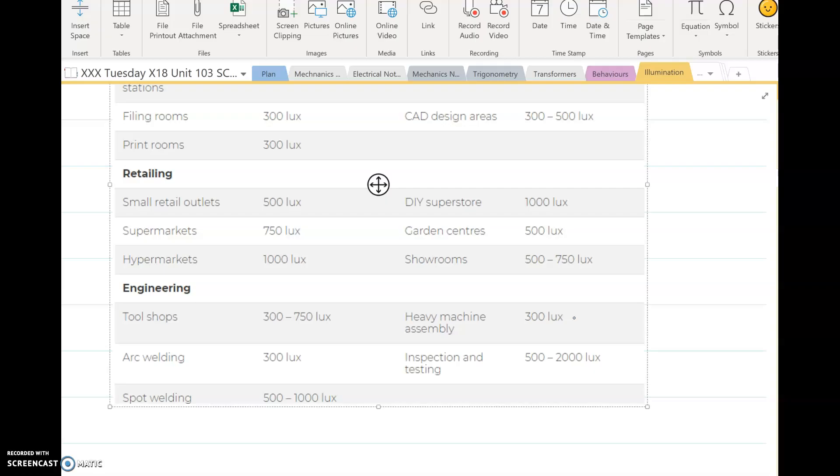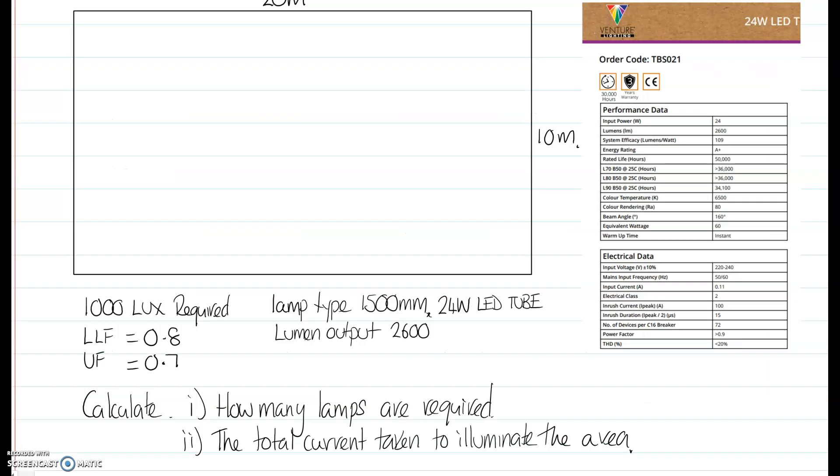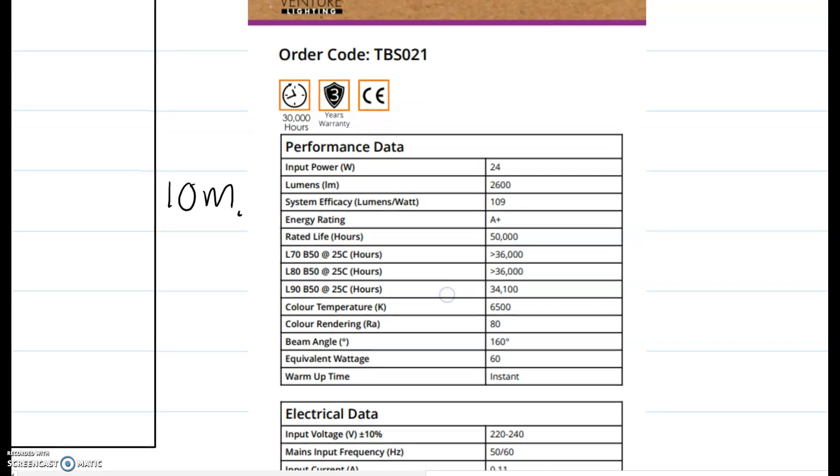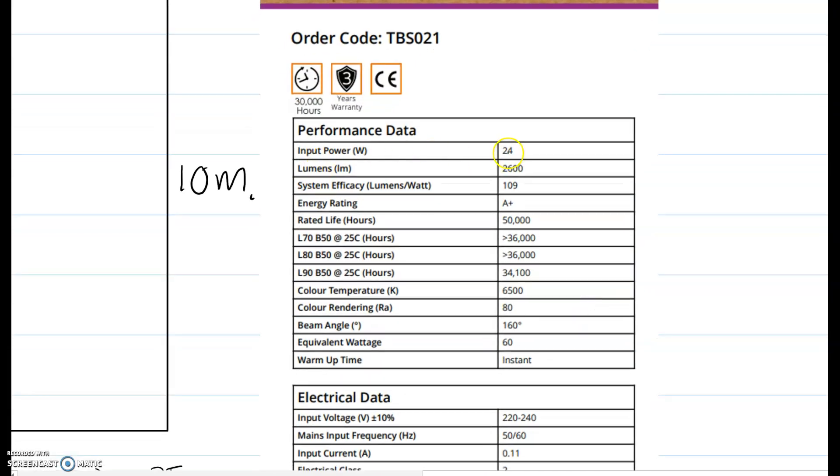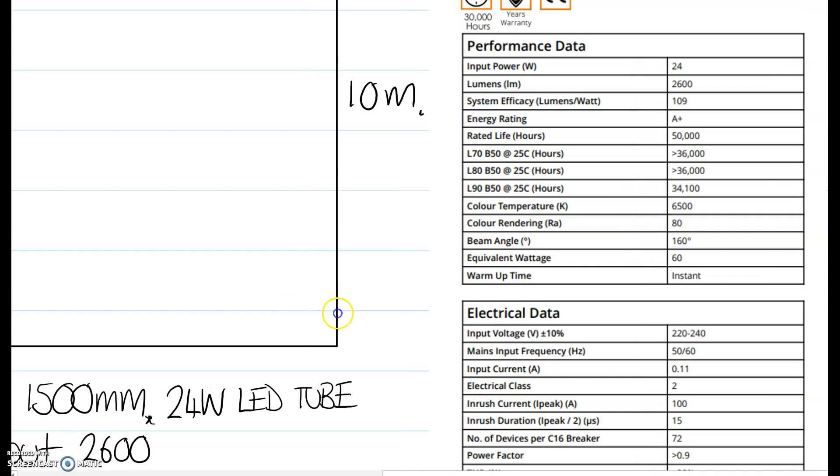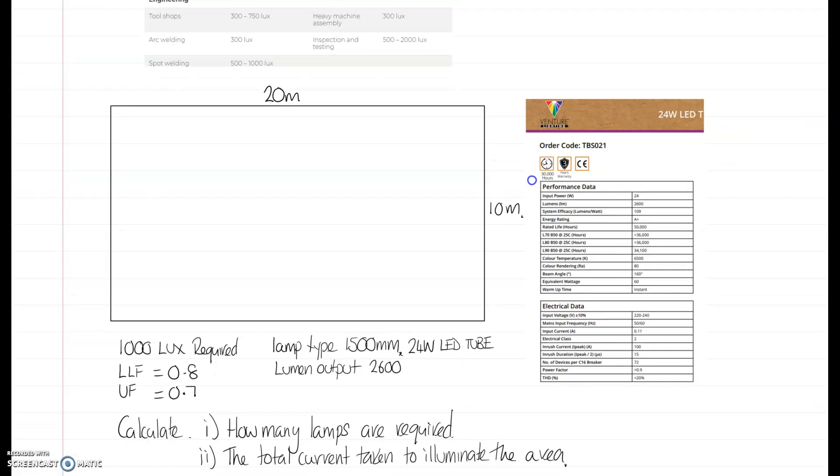Let's look at an example then, and we're going to simulate a workshop area and work out how many lights we actually need to illuminate an engineering workshop up to a value of 1,000 lux. So we have a factory floor or workshop floor of 20 metres by 10 metres, and we're going to use a 1,500mm 24 watt LED tube. I've gone online, just literally searching online for LED data. You can see this is a 24 watt input power, and the lumens is 2,600. The efficacy, lumens per watt, is 109. It also tells you about the colour temperature, so it's nice and cool. 6,500, that's going to be a nice white, clear light.